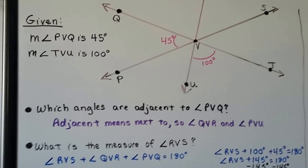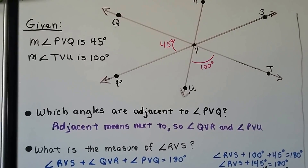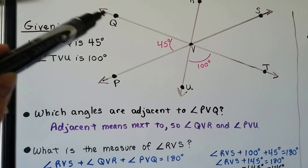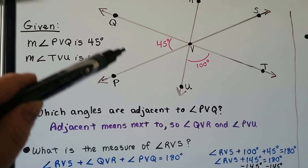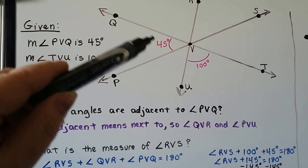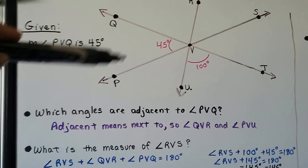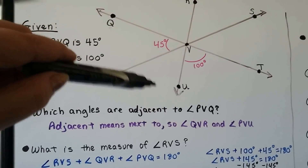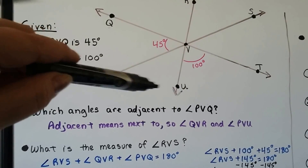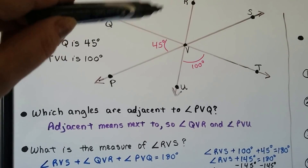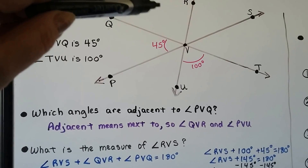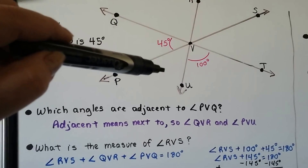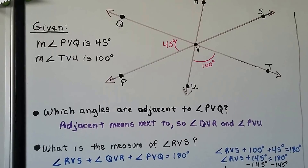Which angles are adjacent to PVQ? Remember that adjacent means next to. So QVR is adjacent to PVQ, and PVU is adjacent to PVQ.